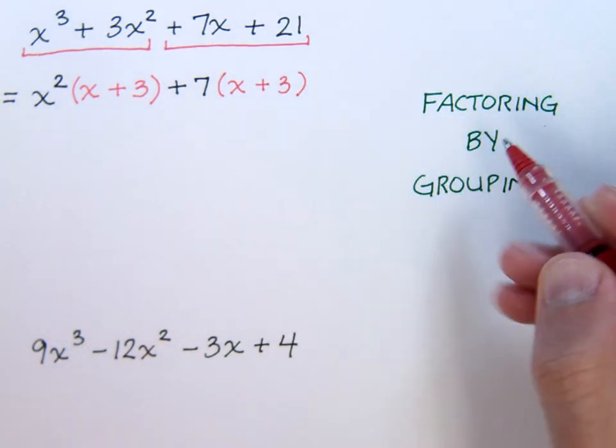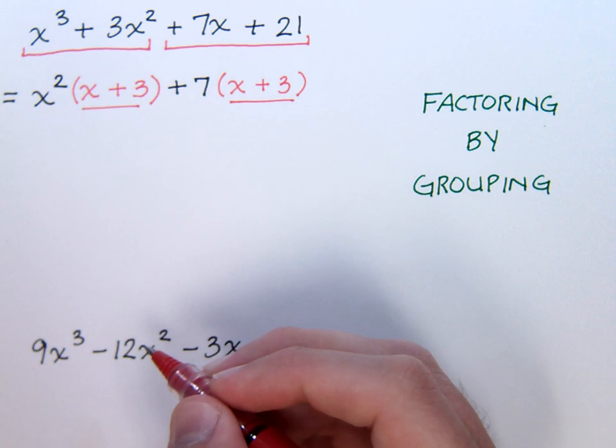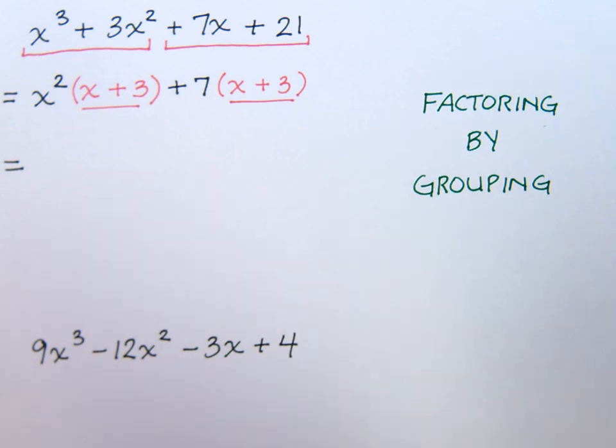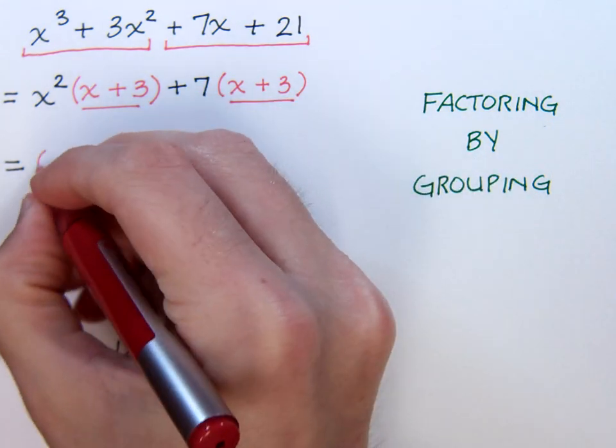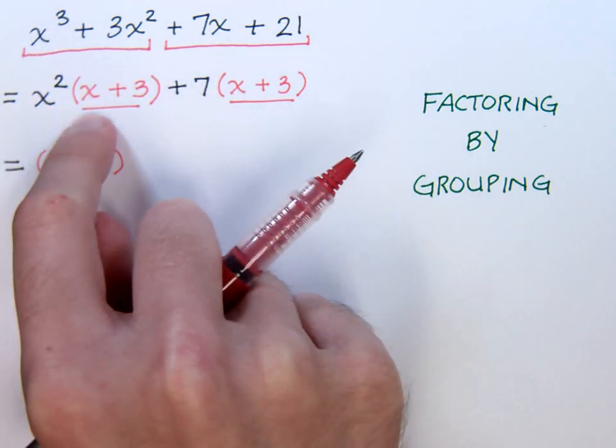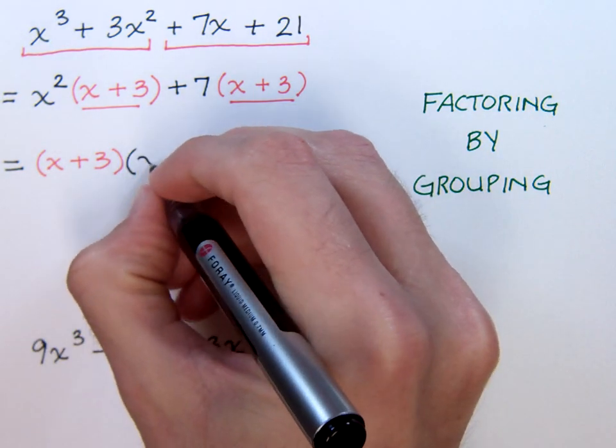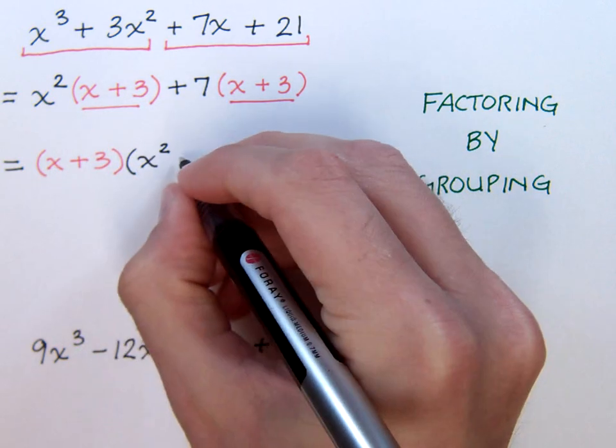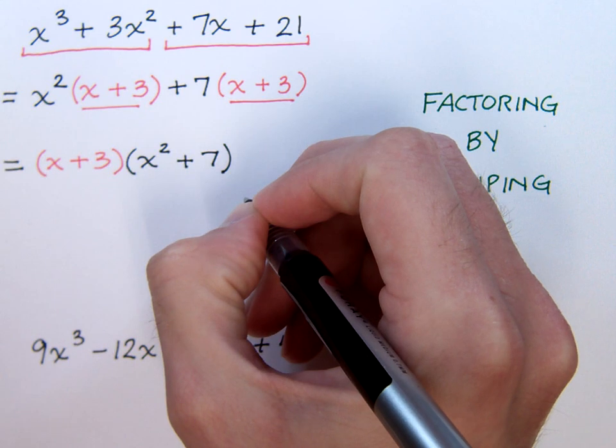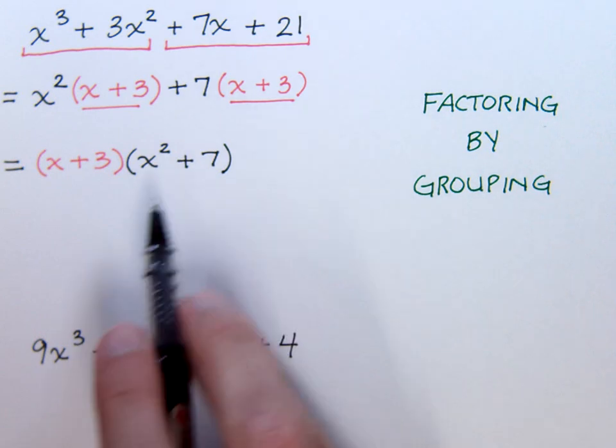Now, in order for us to factor by grouping, this factor must match up with that factor. We see that that is the case, x plus three, so we're going to factor out this huge common factor of x plus three. This x plus three is going to be factored out of both this first group and the second group. And when I factor that out, I'm going to have x squared from the first group and a plus seven from the second group. You can easily check this by foiling or multiplying this back out.